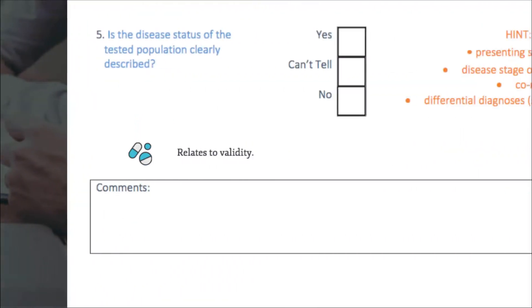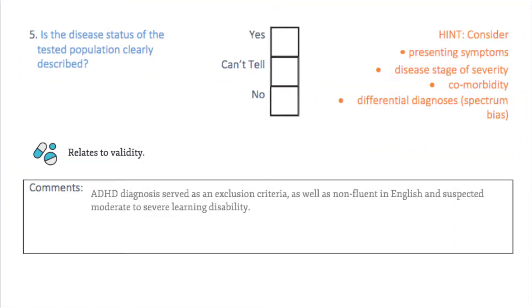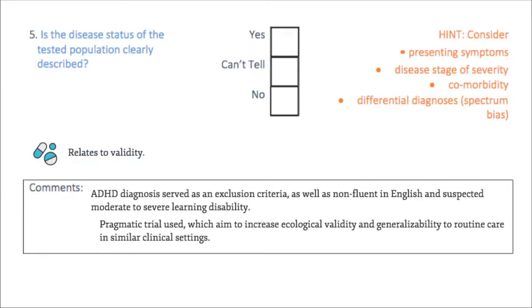In the study by Hollis et al., a previous ADHD diagnosis served as an exclusion criterion, as well as participants non-fluent in English and those with suspected moderate to severe learning disability. Participants were referred for their first ADHD assessment, though it is not entirely clear what criteria were used by the referring clinicians, and the authors contextualise the difficulty in making an ADHD diagnosis with dominant subjective criteria. However, they appear to have made efforts to homogenise their participants as far as possible in a pragmatic trial, which aims to increase ecological validity and generalisability to routine care in similar clinical settings.